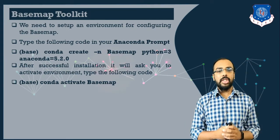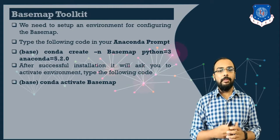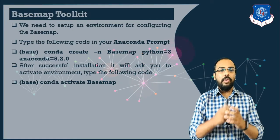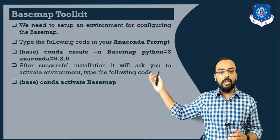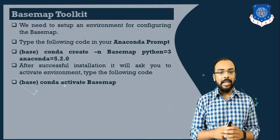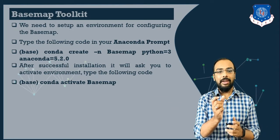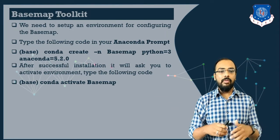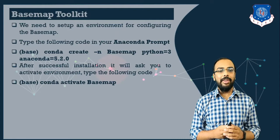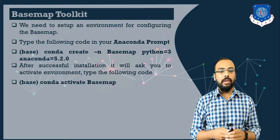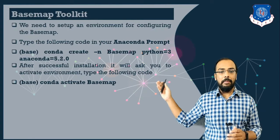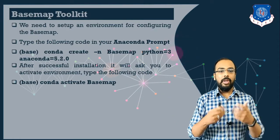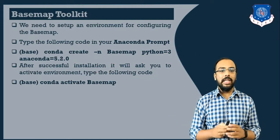After successfully installing the basemap toolkit you need to activate it. Go to your Anaconda prompt and use the syntax: conda activate basemap. The particular use of this library is to plot geographical data.